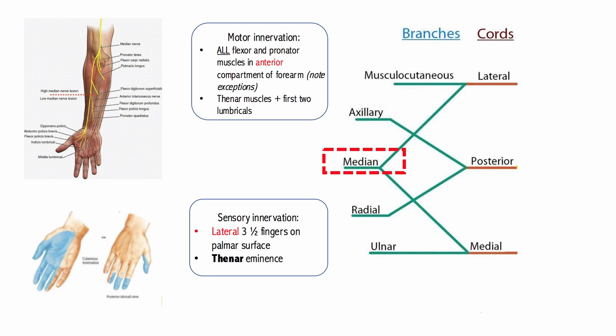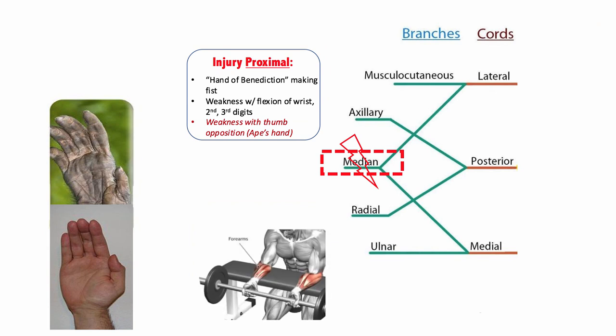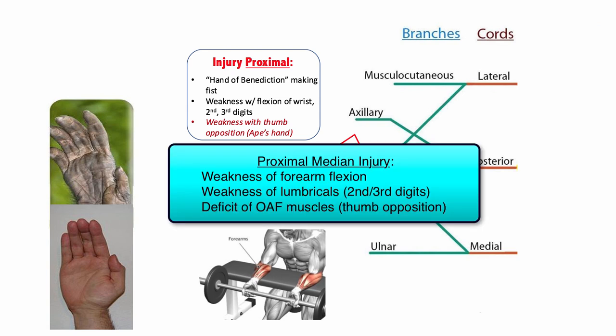Let's talk about what happens when the median nerve gets injured. This can get tricky depending on the site of injury. Proximal median nerve injuries are often seen in the setting of supracondylar fractures. Injuries to the median nerve proximally will cause weakness with flexion of the wrist, flexion of the second and third digits via the lumbricals, and finally flexion as well as opposition of the thumb, which classically produces a deficit known as ape's hand due to the inability to oppose the thumb.